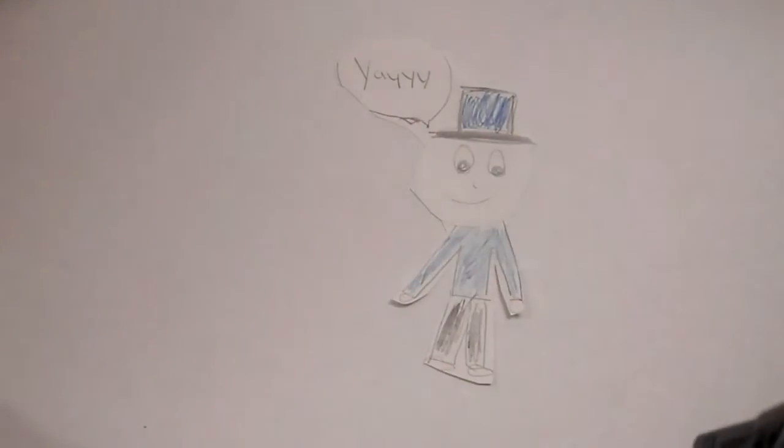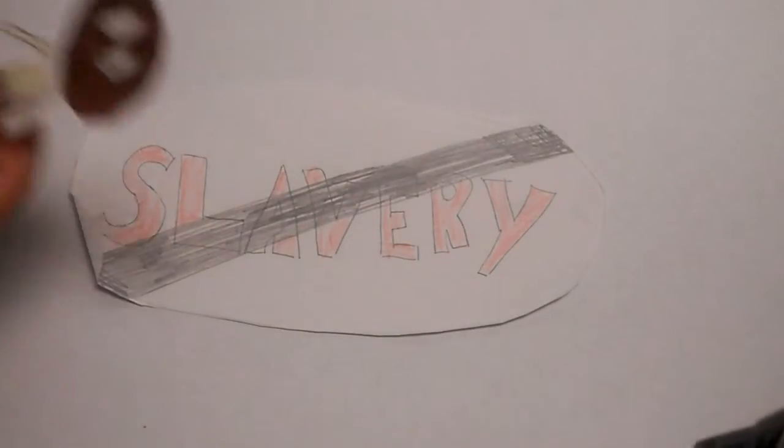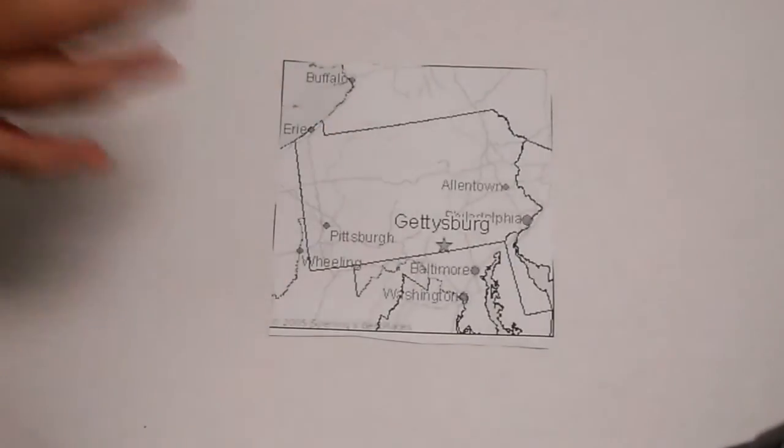After the war, the North ended up winning, and the country was finally united. But slavery still continued to be an issue. Slavery was finally abolished in 1865. This war lasted four years and was the bloodiest war this country has ever seen. The Battle of Gettysburg was the bloodiest battle of the Civil War. It united our country, banned slavery, and made a big impression on equal rights.